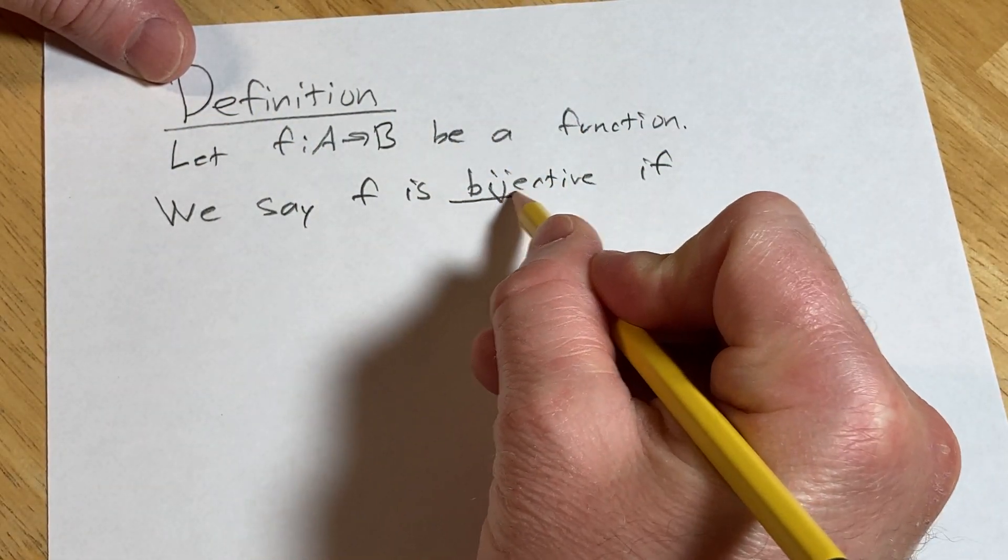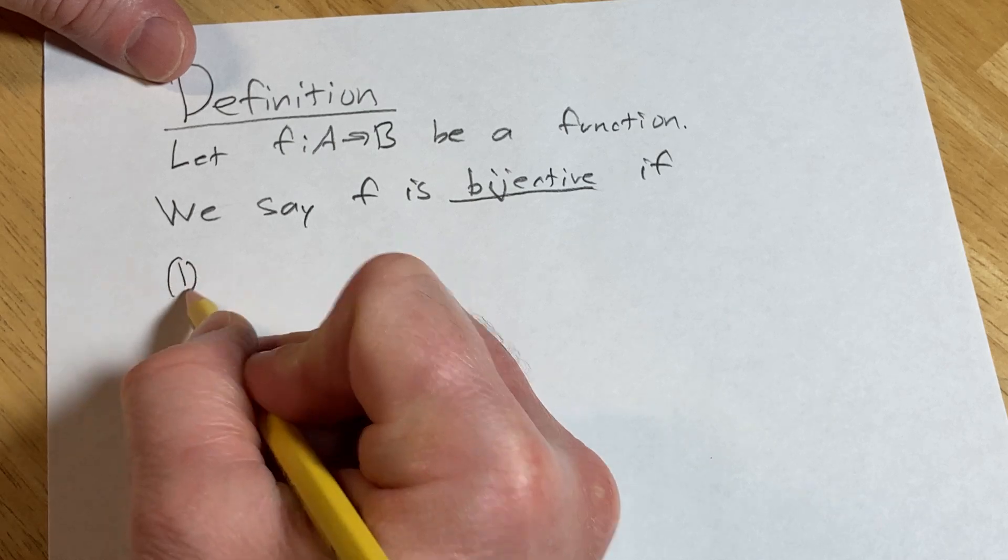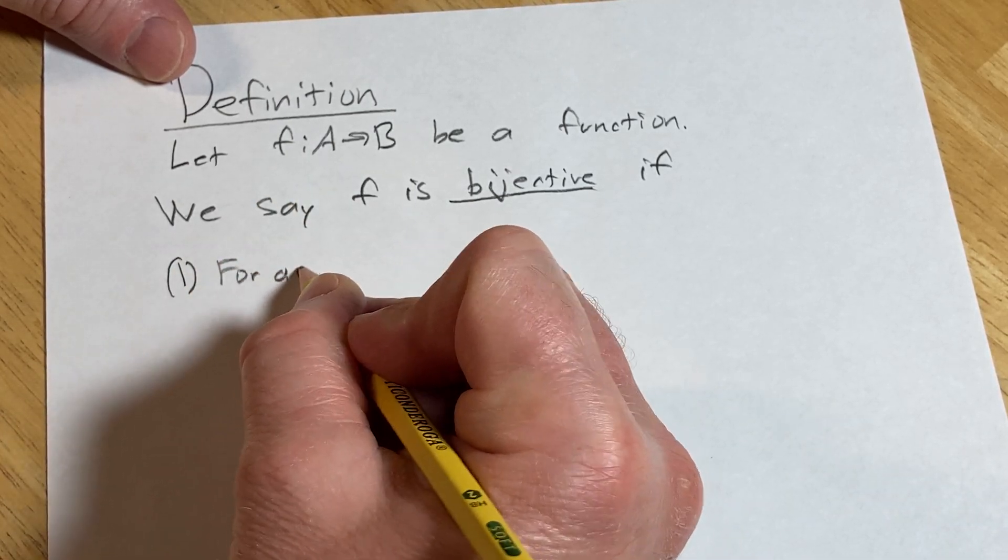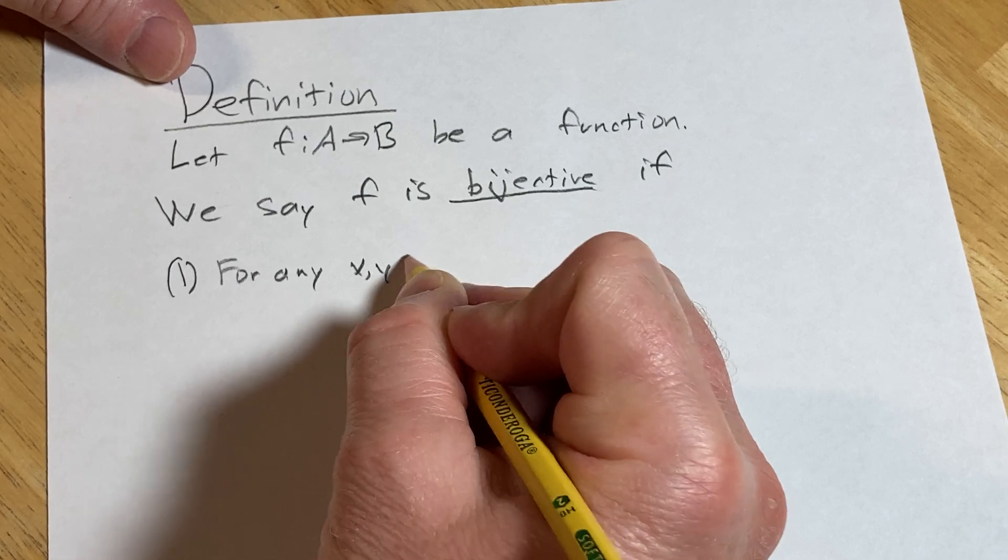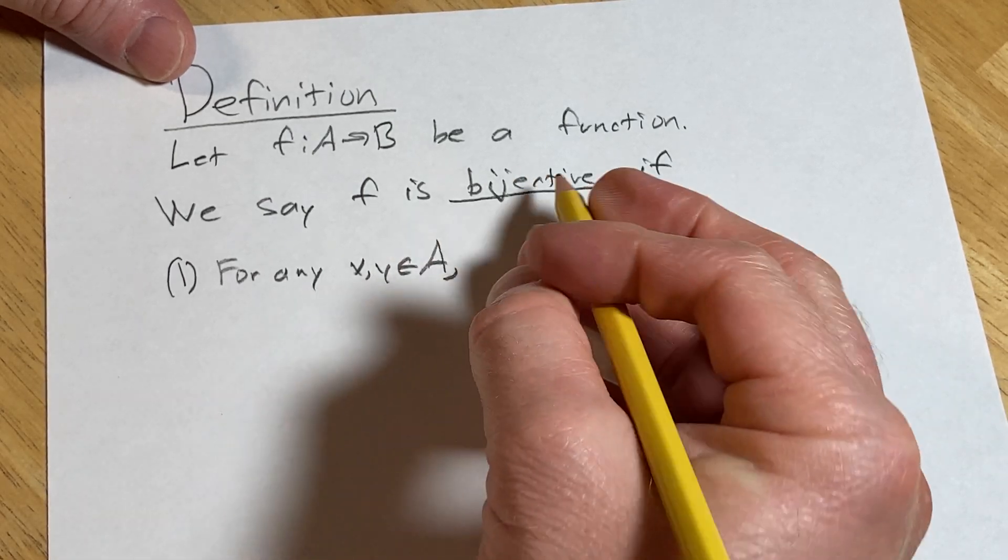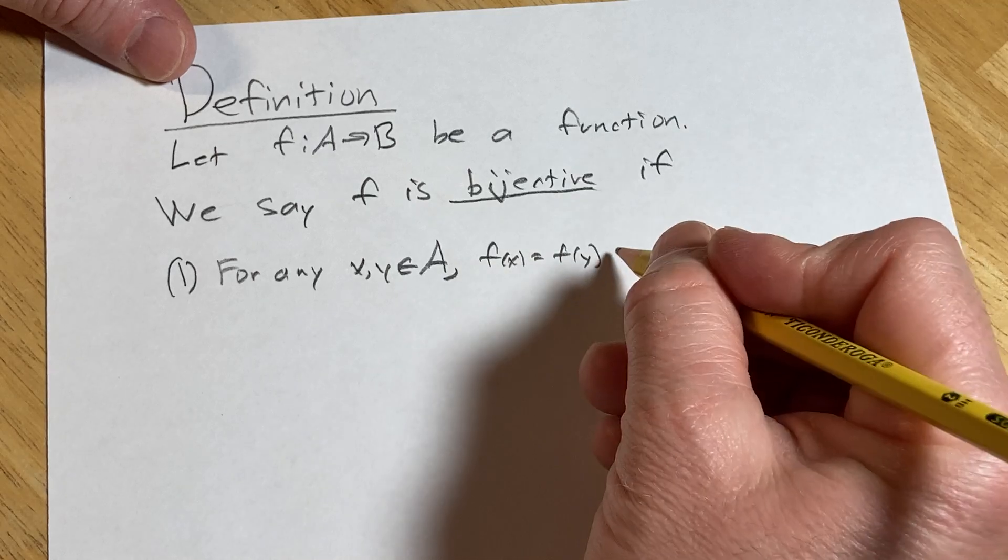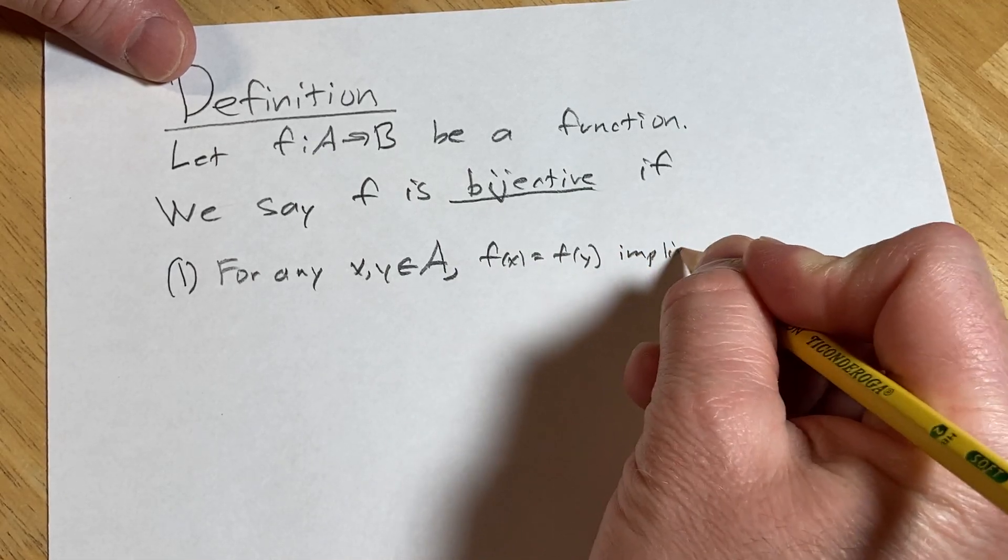We say f is bijective if, one: for any x, y in A, f of x equals f of y implies x equals y.